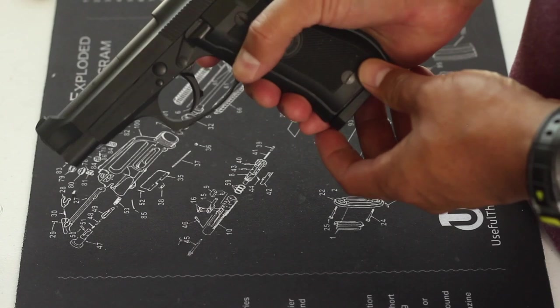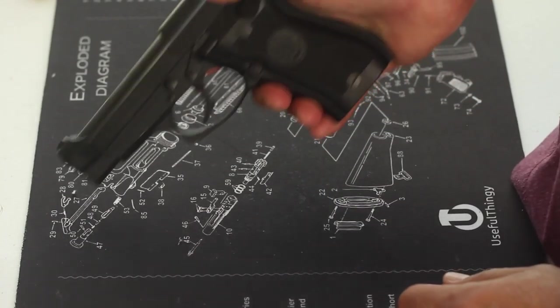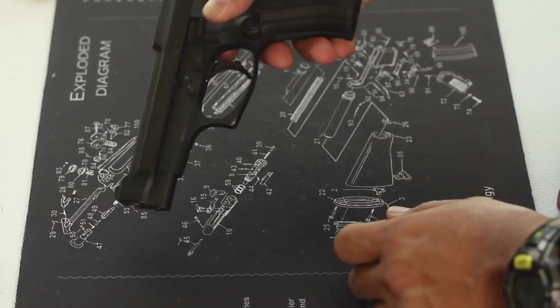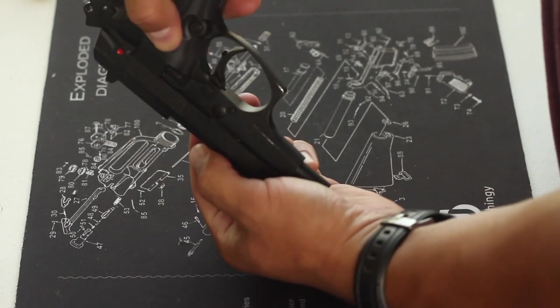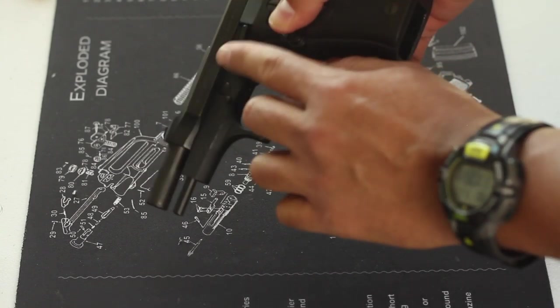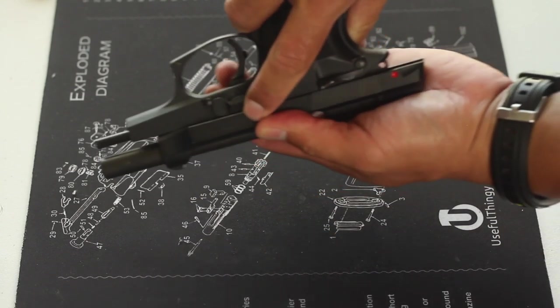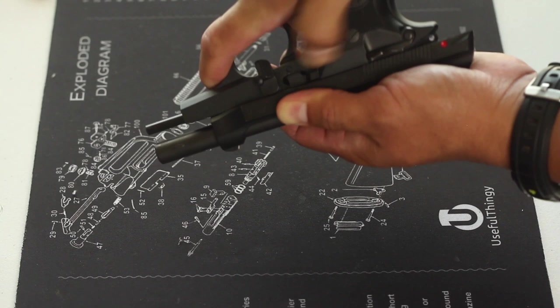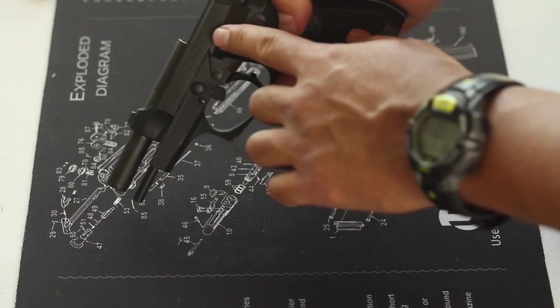Drop the magazine, drop the safety, work the slide just to make sure it's empty. Visually and physically inspect the chamber. Lock the slide to the rear by pushing the slide release lever upward as you hold the slide back. Then press that button on the left just above the trigger guard, then pull the takedown lever downward toward the bottom of the trigger guard. You'll need to keep the button depressed as you pull that lever down. Then pull the slide release back down and pull the slide off just as shown.